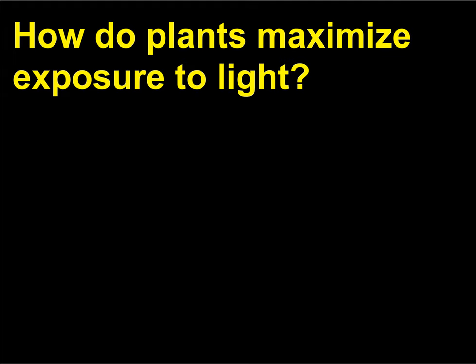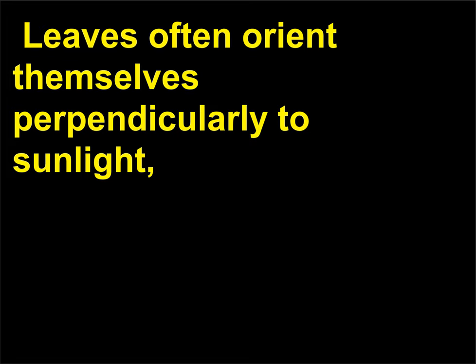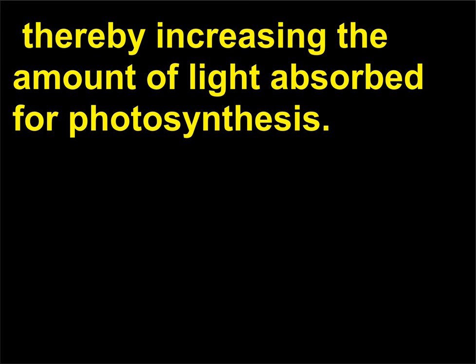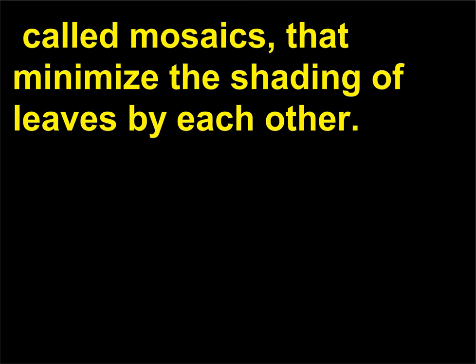How do plants maximize exposure to light? The leaves of many plants move. Leaves often orient themselves perpendicularly to sunlight, thereby increasing the amount of light absorbed for photosynthesis. Leaves also form unusual patterns of layering called mosaics, that minimize the shading of leaves by each other.